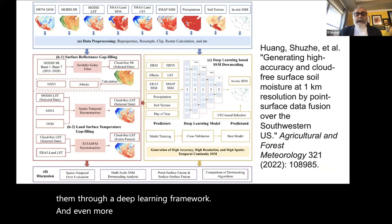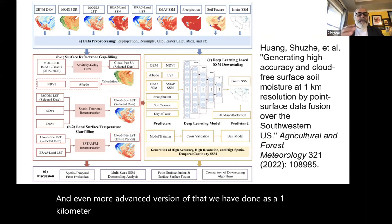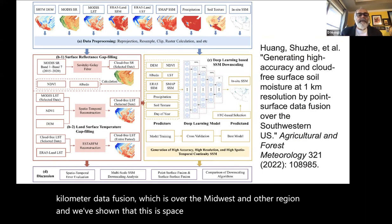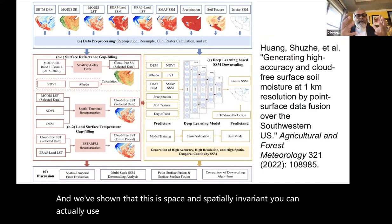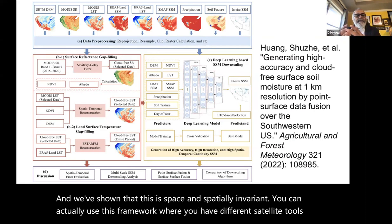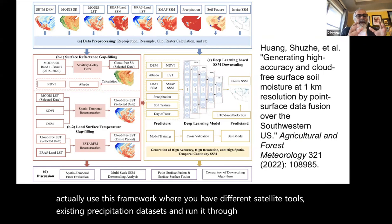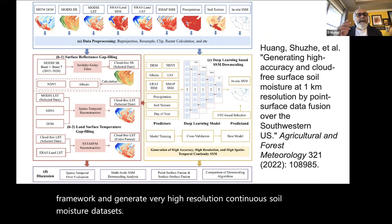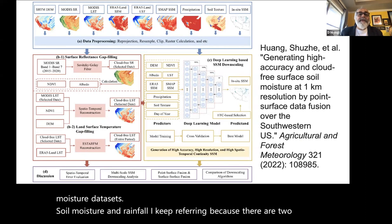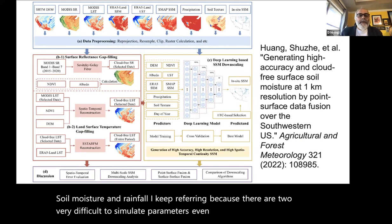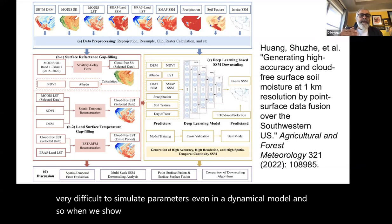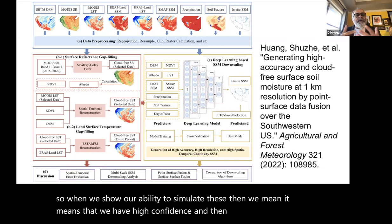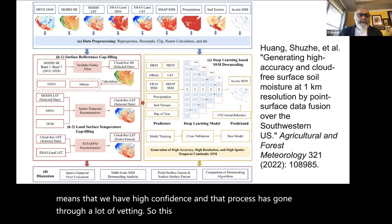An even more advanced version is our 1-km data fusion over the Midwest that is spatially invariant — you can use different satellite tools with existing precipitation datasets through a deep learning framework to generate very high-resolution continuous soil moisture data. Soil moisture and rainfall are two very difficult parameters to simulate even in dynamical models, so our ability to simulate them demonstrates high confidence that the process has been well-validated.